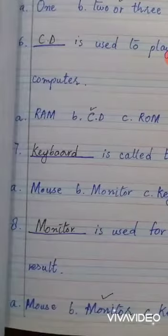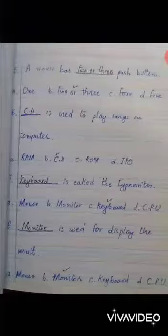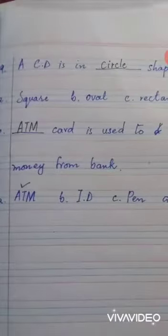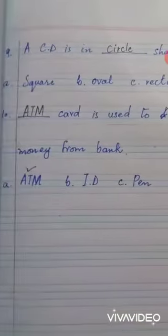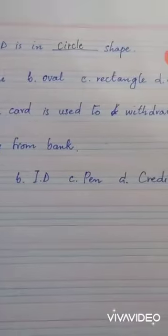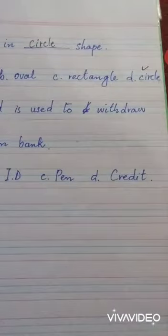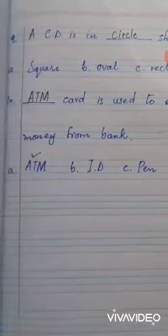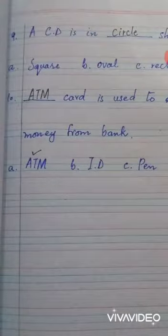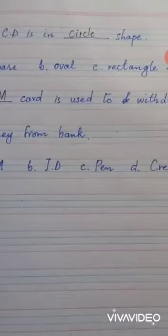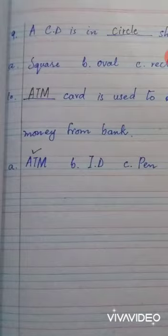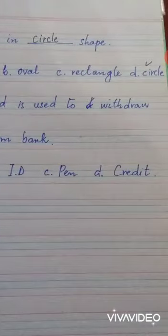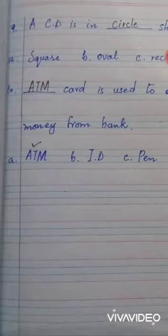Number eight: dash is used to display the result. Options are mouse, monitor, keyboard, CPU. Answer is monitor. Number nine: a CD is in dash shape. Options are square, oval, rectangle, circle. Answer is circle.